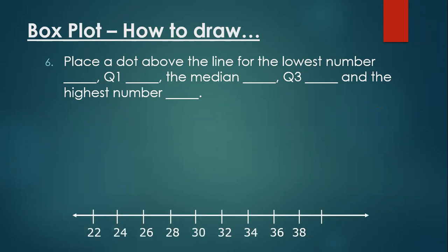The first point will be the lowest number, which is 23. We place a dot directly above 23. Next is Q1, we place a dot directly above 25. The median, which is 30, we place a dot directly above the median. We have the upper quartile, Q3, at 32. And lastly, we have the highest number, which is 35.